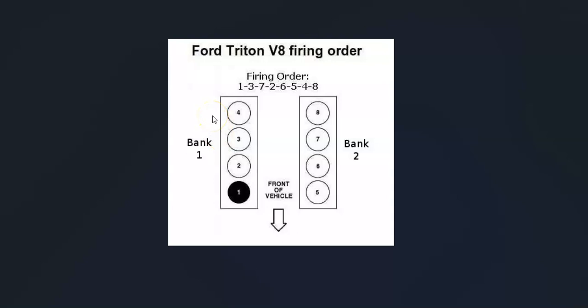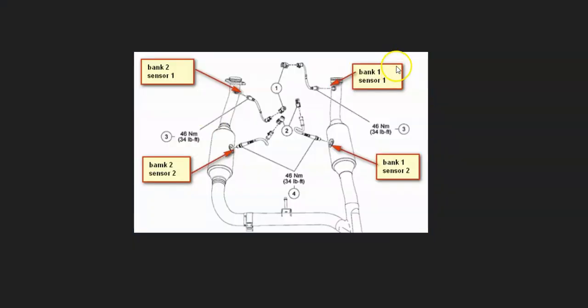For example, here's a 2007 Ford F-150, and bank one sensor one would be located right here. It's going to be before the catalytic converter and it's also called the upstream oxygen sensor.